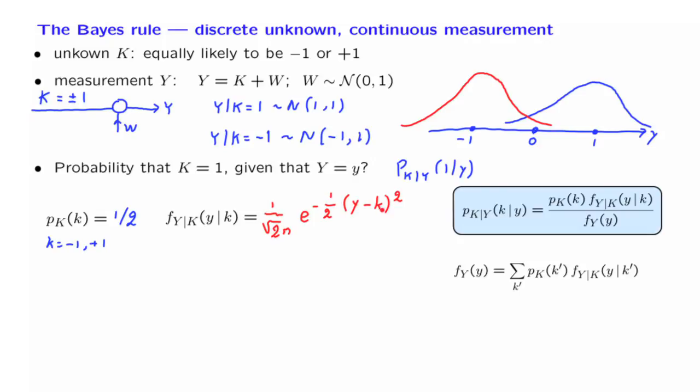And it corresponds, when you set K equal to 1, it corresponds to this graph. When you set K equal to minus 1, it corresponds to that graph.